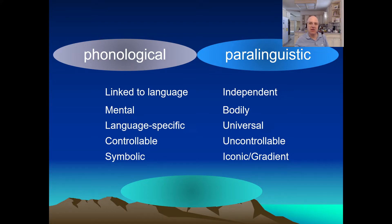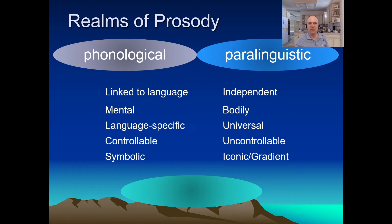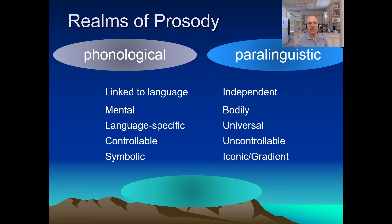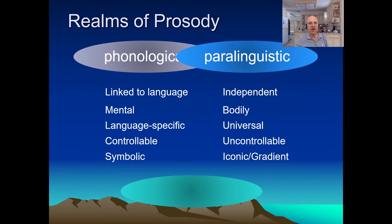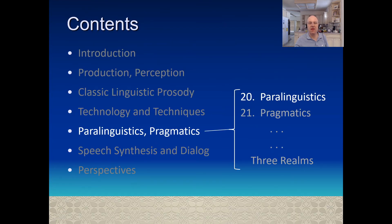This slide summarizes some of the differences we've seen, and a couple we'll discuss later. Overall, they're different enough that we can call them two different realms of prosody. Usually we'll want to use different features and modeling techniques for whichever realm we're interested in, while remembering that pure paralinguistic prosody is actually rare, and the two realms often overlap and are entangled in interesting ways. That wraps it up for paralinguistics — in the next lecture, we'll start talking about the pragmatics-related functions of prosody.